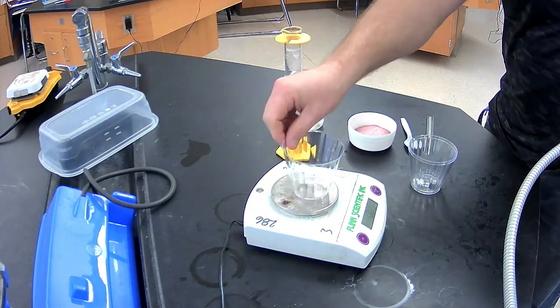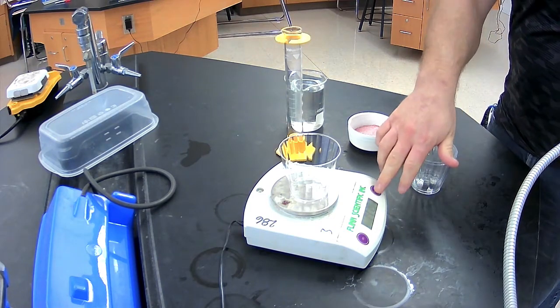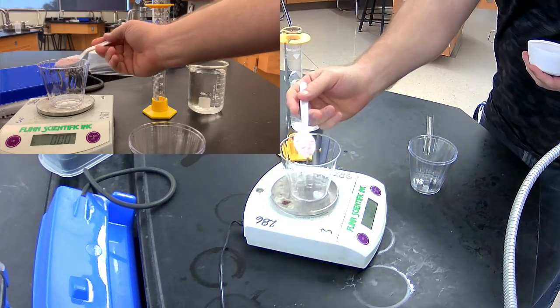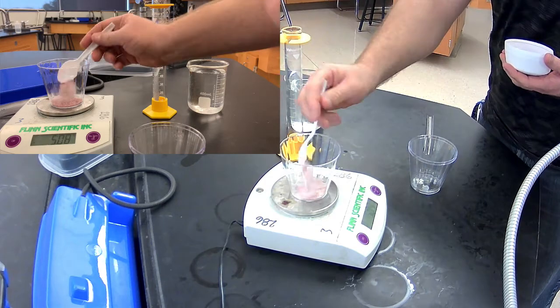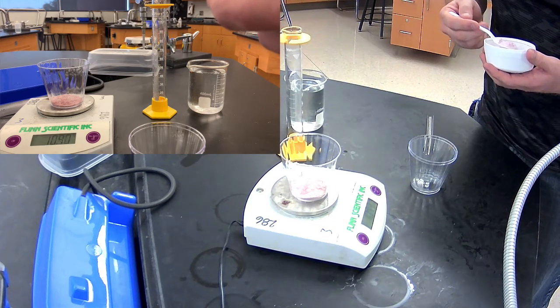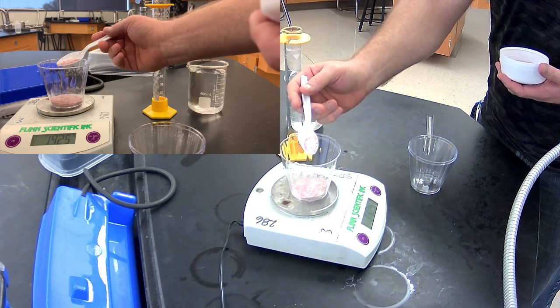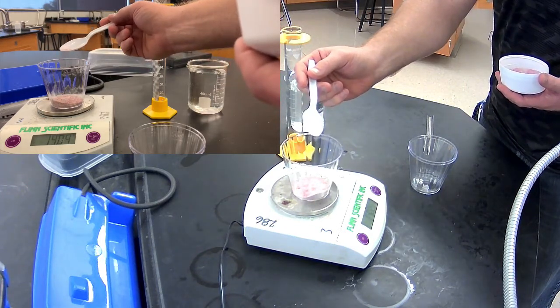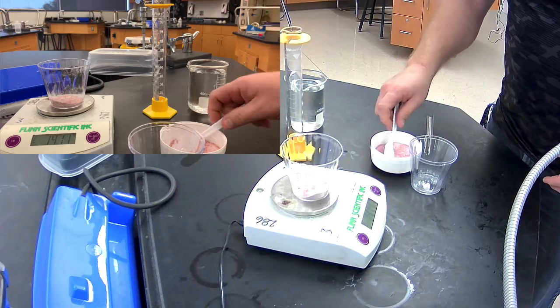So to do that I'm going to put my first beaker on my balance and I'm going to zero that out. And then I'm going to add in the proper amount of mass from my calculations, which was 14.1 grams. And that looks pretty good. So I had the 14.1 grams, which is needed for my stock solution.